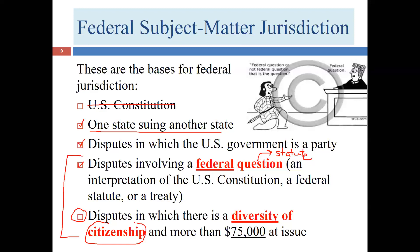If none of the first three categories applies to your lawsuit, your last chance for a basis to file in federal court is satisfying the requirements for diversity of citizenship. You only need one of the four reasons to get into federal court, but you do need at least one. For diversity of citizenship, if Larry is a citizen of Oklahoma and Bob is a citizen of Texas, we have diversity of citizenship.